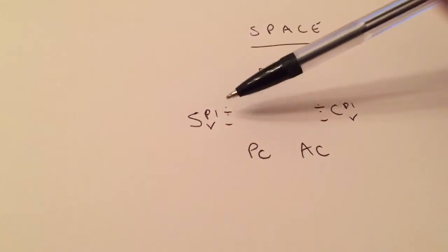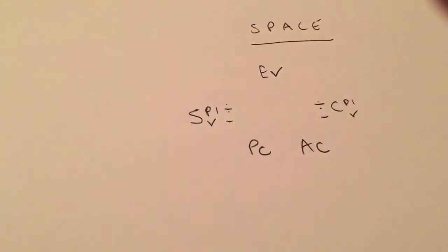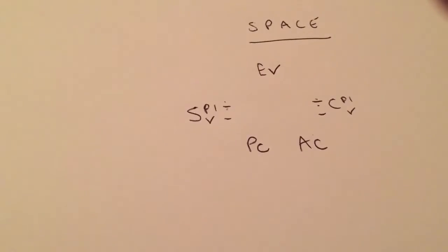So to work out SPI, it's simply earn value divided by planned cost. CPI, earn value divided by actual cost.